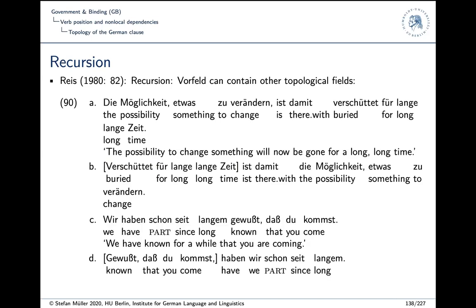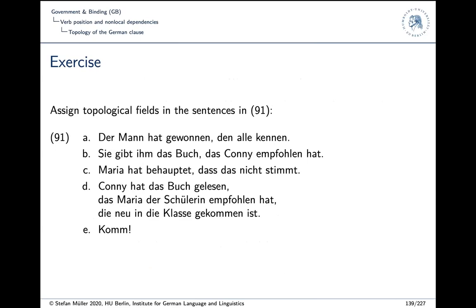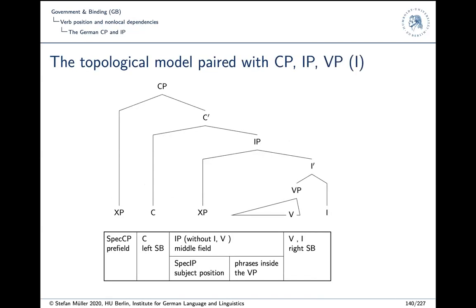There is another sentence pair of this kind: again you have the participle and a sentential argument in the Nachfeld. There are some examples you can analyze into topological fields as an exercise, also discussed in the book. So let's have a look at how these sentences could be mapped to the CP/IP model.